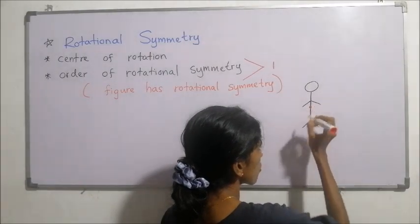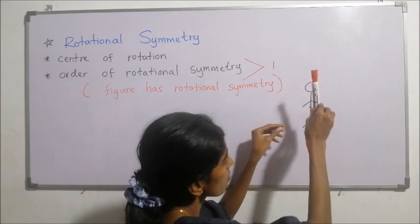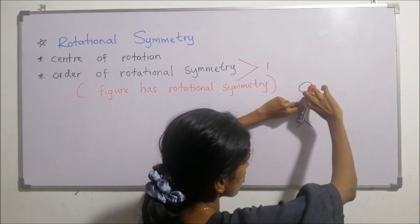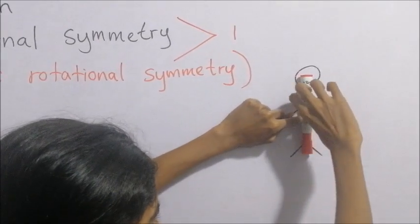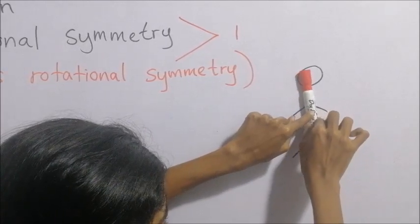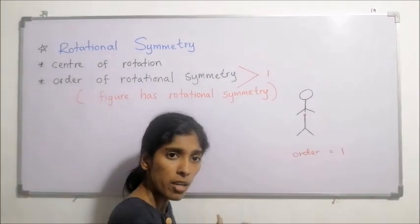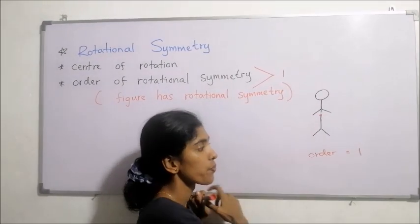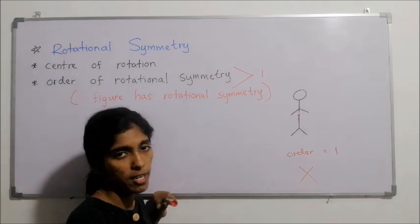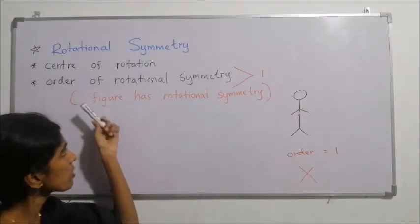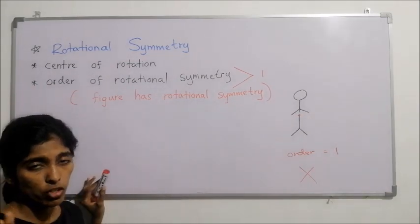For example, I'm marking the center of rotation. Think of this marker pen as the figure — I'm rotating it at this fixed point. While rotating, the head is down when in the original figure the head is up, so it is not coinciding. After completing the full rotation, it coincided only once — so the order is 1. This figure does not have rotational symmetry because the order must be greater than 1. Order can be found for any figure, but not all figures have rotational symmetry.